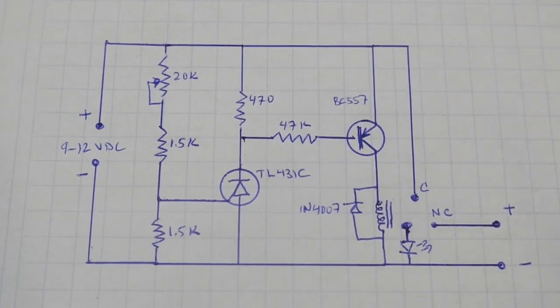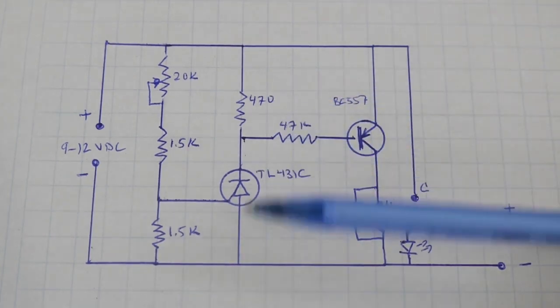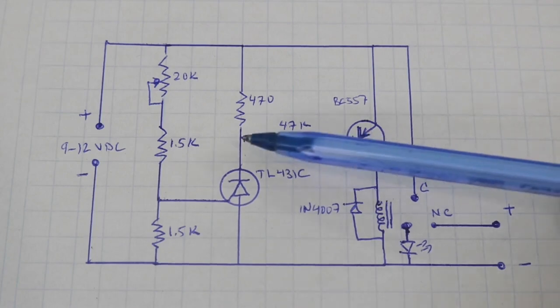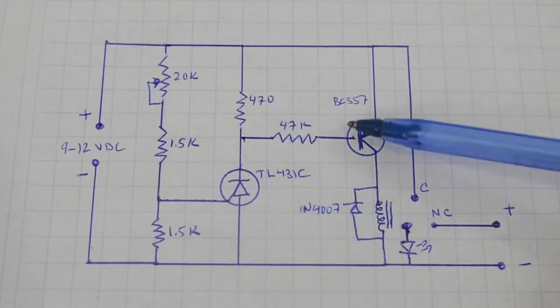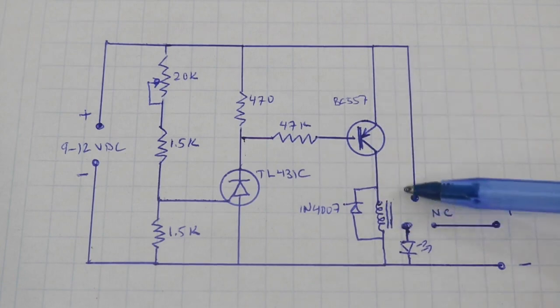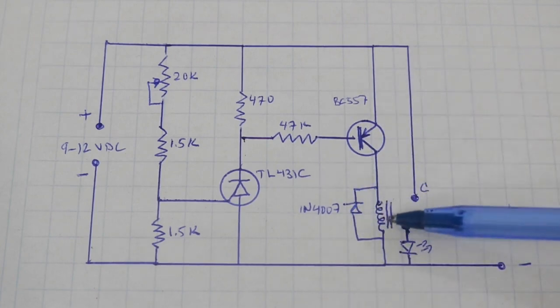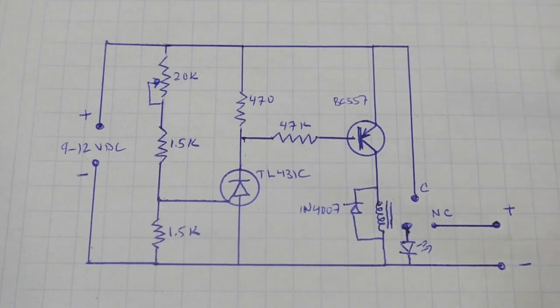Now what happens if the voltage is higher than the preset value? Then the component closes and the transistor base goes to ground. Now the transistor is in conduction mode and the relay is activated. When the relay activates, this contact moves to the normally open position and power is cut to our load. And this LED is now activated indicating that we are in protection mode.